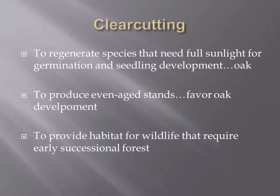Clear cutting is done to regenerate species that need full sunlight for germination and seedling development — that's oak. And it's done to produce even-aged stands which favor oak, because in an even-aged stand all the oak are recruiting upward at the same time as a single cohort with equal access to sunlight.